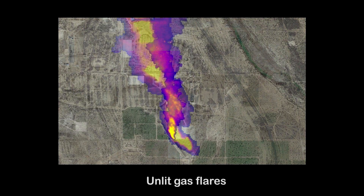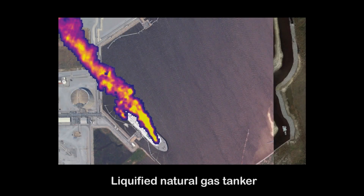Methane is a main component of oil and gas that commonly leaks during production, processing, and transport.